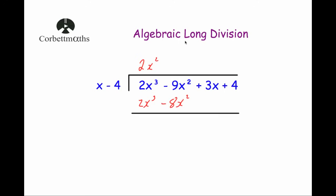Be careful here. 2x cubed subtract 2x cubed is zero. Now we've got minus 9x squared and we're subtracting minus 8x squared. Remember: whenever you're subtracting a negative, you add it on. So minus 9x squared minus (minus 8x squared) means adding 8x squared to minus 9x squared — that gives minus x squared. Then we just write plus 3x plus 4 for the remaining terms.